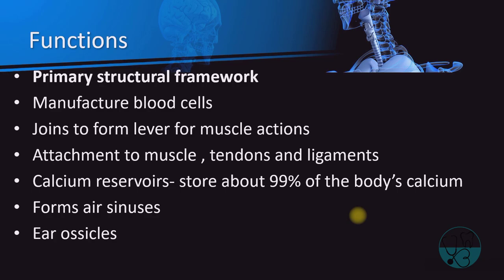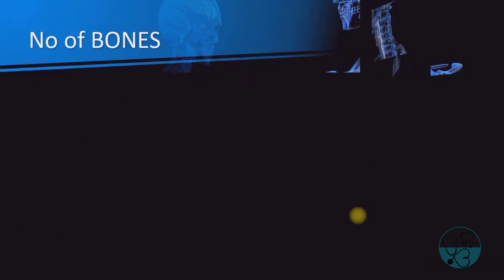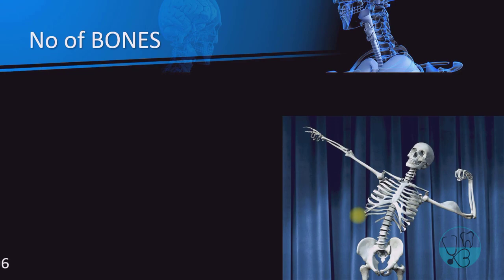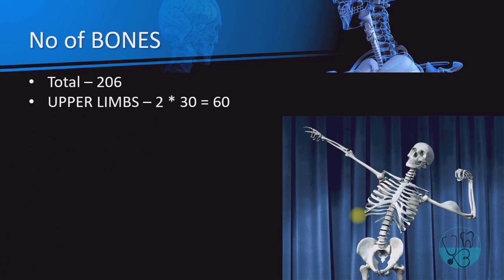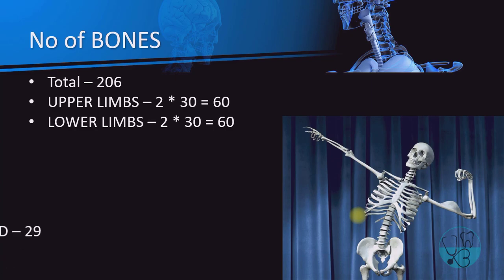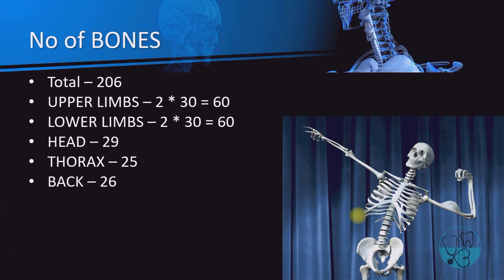The total number of bones in the human body is 206. Each of the two upper limbs contains 30 bones, and each of the two lower limbs also contains 30 bones, making 60. The head consists of 29 bones, the thorax is made up of 25 bones, and the back is made up of 26 bones. You have two girdles in your body — four pectoral girdles and two pelvic girdles. A girdle is a structure that encircles the next body part.